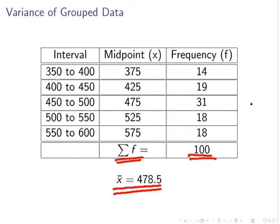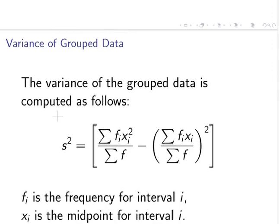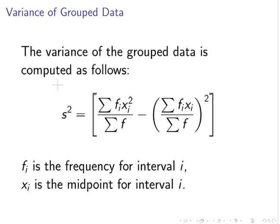Okay, so moving on. The variance of grouped data is given by this formula here. Now, it's quite a forbidding-looking formula.